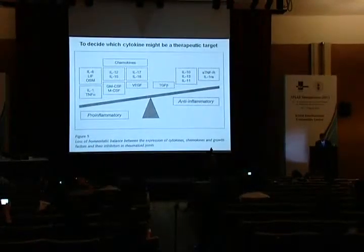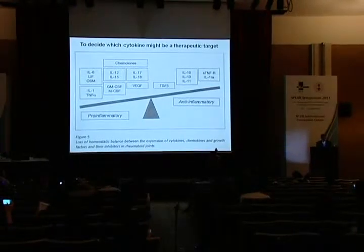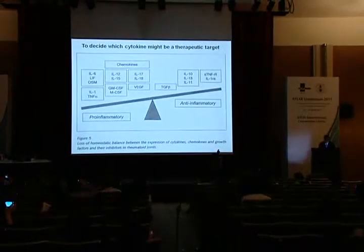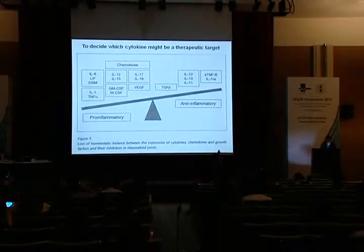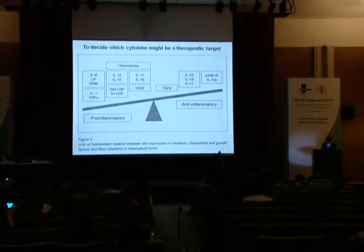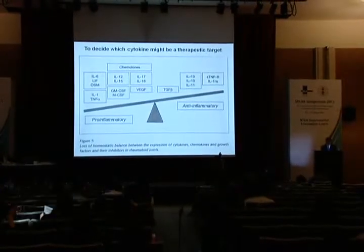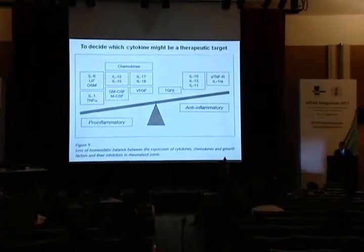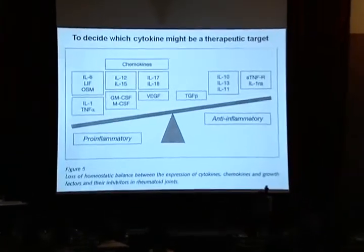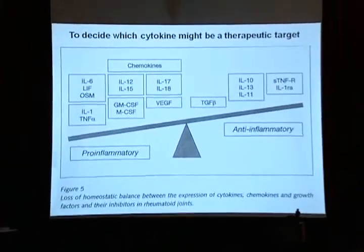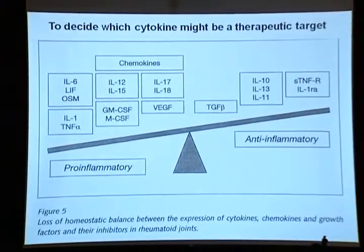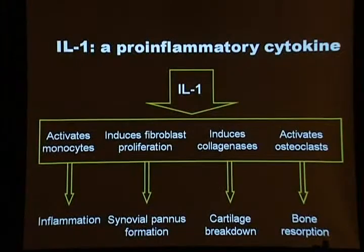By this slide you can see it's a homeostatic balance. We can see cytokines like IL-1, TNF-α, and IL-6. That's why these three cytokines became the mainstream targets for treating rheumatoid arthritis.